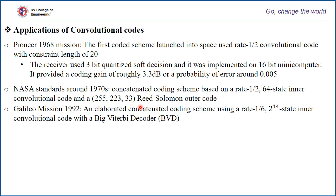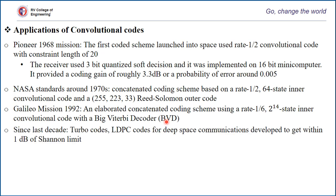Another major development was in the Galileo mission. When the primary antenna failed to deploy, an elaborate concatenated coding scheme was employed, which used a 2^14-state convolution code as the inner code and a Reed-Solomon code as the outer code. A large-scale Viterbi decoding algorithm, shortly known as BVD, was proposed that could work over such a large number of states. It was a very impressive step forward, able to salvage the mission because of this concatenated code. It achieved a coding gain of around 10.2 dB and a bit error rate as low as 10^-7.